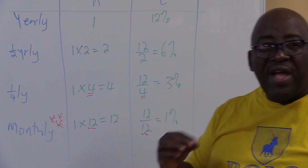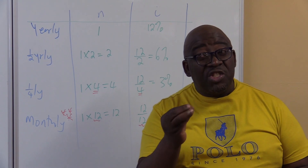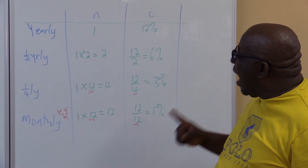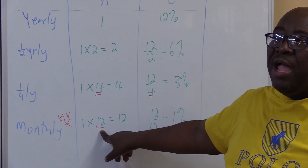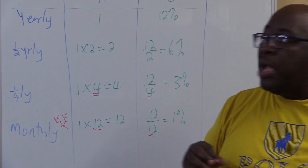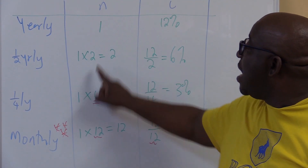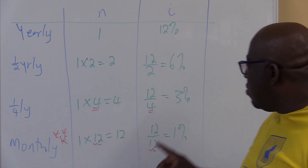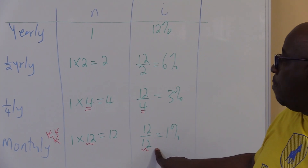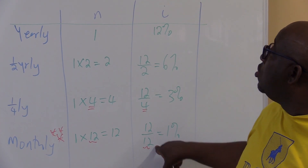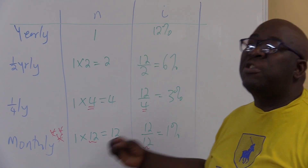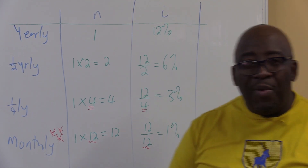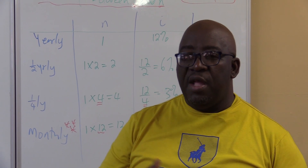If you understand this, you will never experience problems with financial maths — your English comprehension skills are important here. When you multiply N by 12, you are changing it from years into months. At times you will have a situation where it is compounded monthly and you divide i by 12. But if the question gives N already in months, you don't multiply by 12 again, because they would have already done that for you. We'll now look at how they set this in the examination, starting with compound interest then moving to annuities. Thank you.